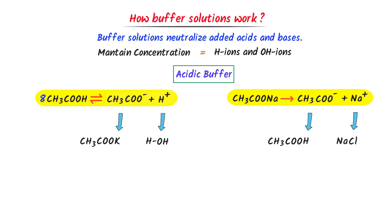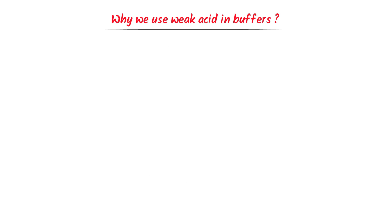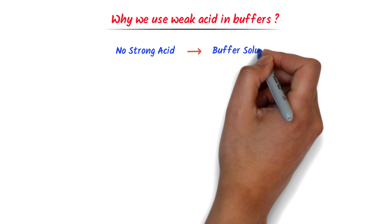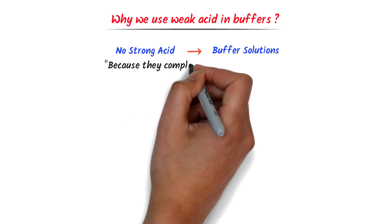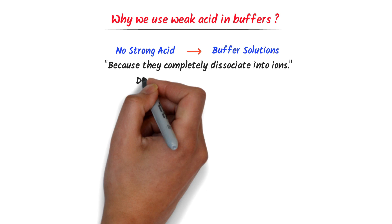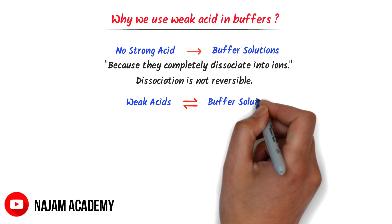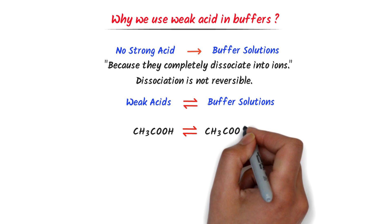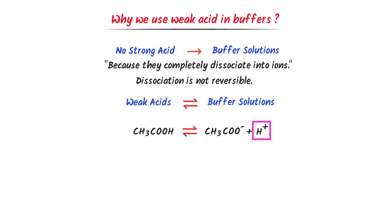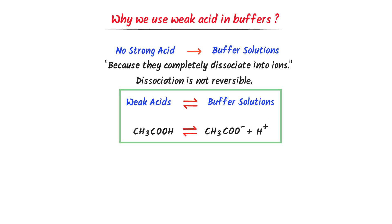Let me teach you one favorite question which a lot of students do not know how to answer: why do we use weak acid in buffer solution? Firstly, remember that we do not use strong acids in buffer solutions because strong acids completely dissociate into their ions, so the dissociation of a strong acid is not reversible. We use weak acid because it partially dissociates and its dissociation is reversible. This means that when the hydrogen ion concentration is disturbed in the solution, the weak acid will further dissociate to produce more hydrogen ions in order to maintain the constant pH of the solution. Therefore, we use weak acid in buffer solution.